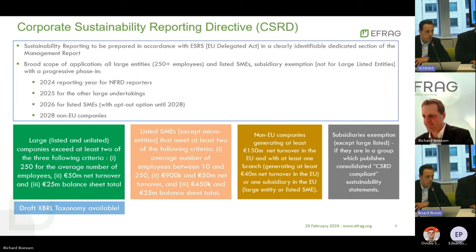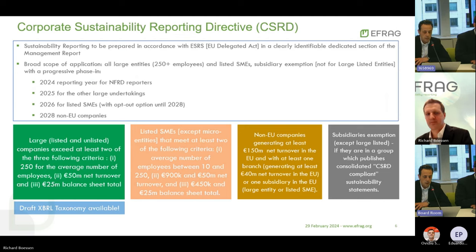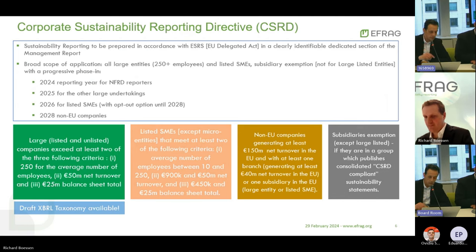The sustainability statements are to be reported in a clearly identifiable section of the management report. The CSRD has a broader scope than its predecessor. All large undertakings exceeding criteria — for instance, more than 250 employees — are in scope, with a progressive phase-in starting from fiscal year 2024 with large listed companies and groups, then 2025 for other large undertakings, 2026 for listed SMEs, and 2028 for non-EU countries. The draft XBRL taxonomy reflects the set one of ESRS applicable to large undertakings and large groups.